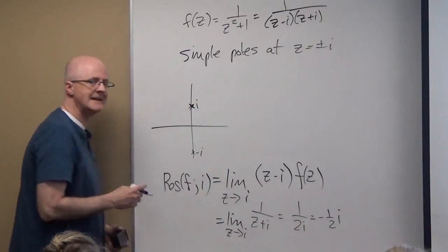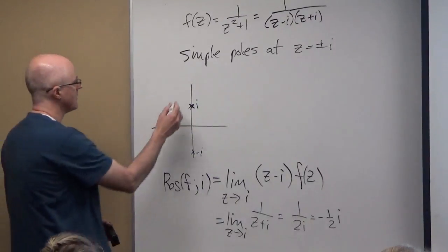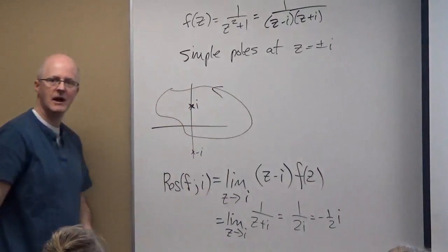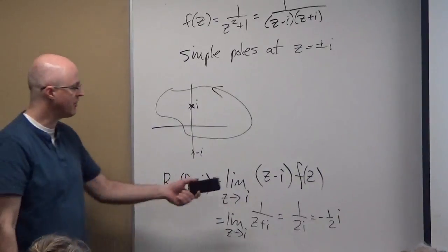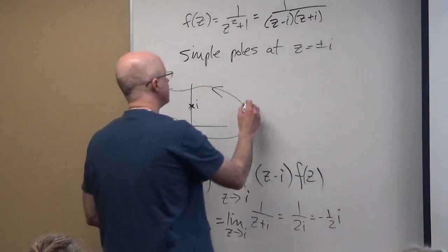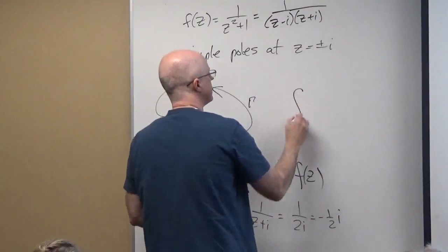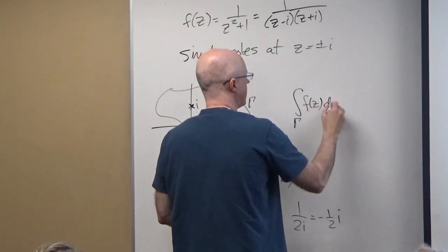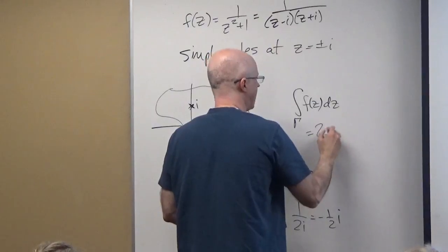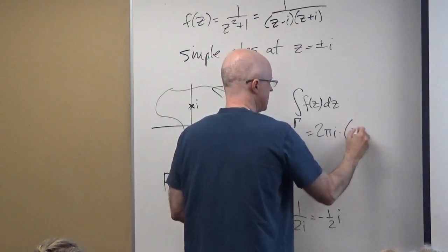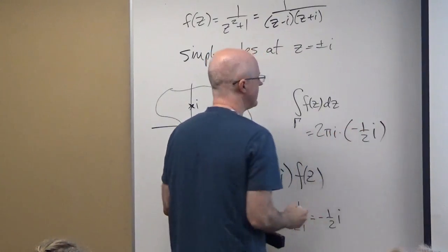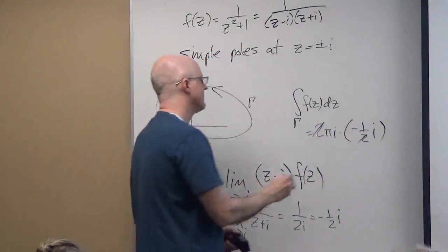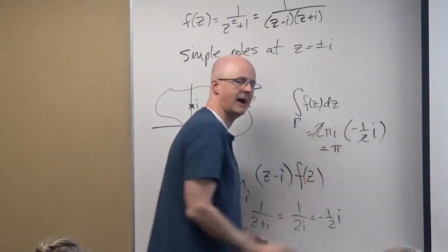Therefore, the integral around any simple closed curve enclosing i in the counterclockwise direction equals 2πi times the residue. By the residue theorem, the integral of f(z) over gamma is 2πi times negative one-half i. The two's cancel, and i times negative i is positive one, so this simplifies to π.